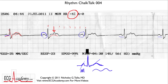It looks abnormal because there is a P wave superimposed on top of the T wave. This P wave doesn't conduct, so there's no QRS following it. And so you think — blocked P waves — this must be AV block. But that's not quite right.